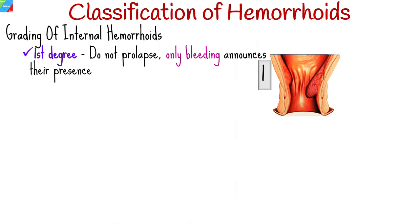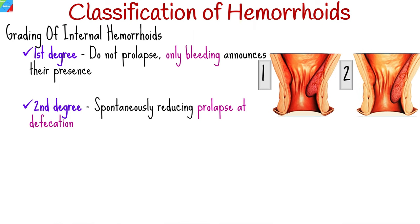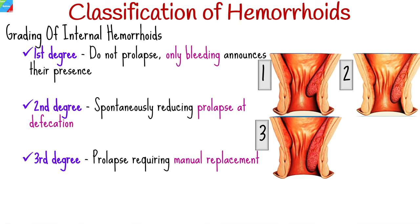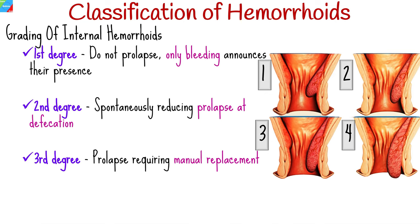Rectal bleeding is frequently the first sign of internal hemorrhoids. Internal hemorrhoids can be classified into grades: first degree — they do not prolapse and remain in the rectum, with only bleeding announcing their presence. Second degree — they prolapse through the anus on defecation but spontaneously reduce. Third degree — they prolapse and require digital or manual reduction. Fourth degree — this is a permanent prolapse where the hemorrhoid remains persistently prolapsed.